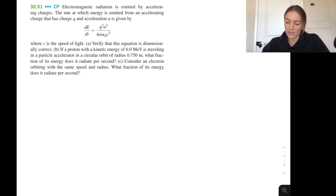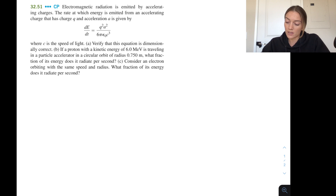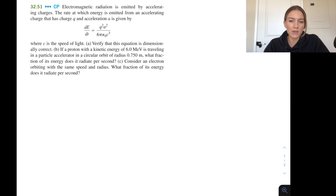The first problem is a three-dot challenge problem from Chapter 32. Electromagnetic radiation is emitted by an accelerating charge — all charged particles that are accelerating radiate energy. We have the rate at which energy is emitted from an accelerating charge with charge Q and acceleration A given by the Larmor formula. This is the power — energy per unit time.